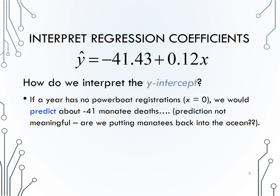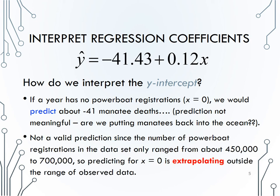Does this prediction make sense? Are we putting manatees back in the ocean? Of course not! This is not a valid prediction, because the number of powerboat registrations in our data only range from 450,000 to 700,000. So, predicting for x equals zero is extrapolating, or by definition, predicting a value of the response for an x-value outside the range of our data set.